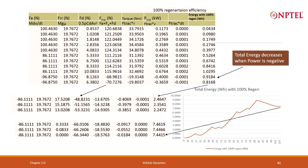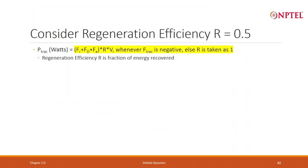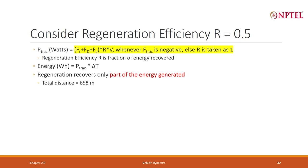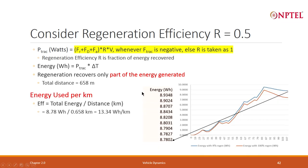What if I do not take R equal to 100 percent — say R = 0.5? Whenever the traction force is negative, R is taken as 0.5; otherwise R = 1. Energy consumed is still P_traction × delta t, but regeneration recovers only part of the energy. Total distance travelled remains the same — 658 meters — but now the blue curve is slightly higher than the red.